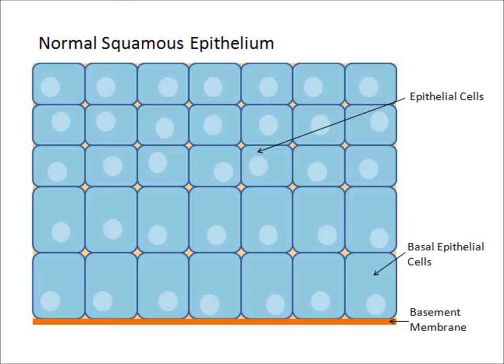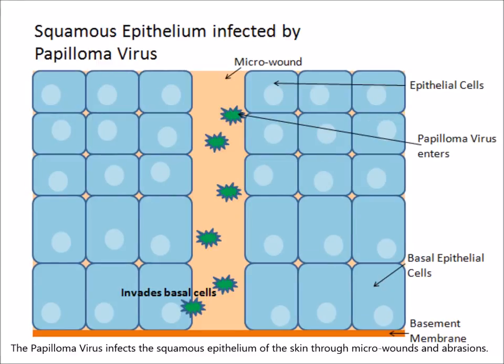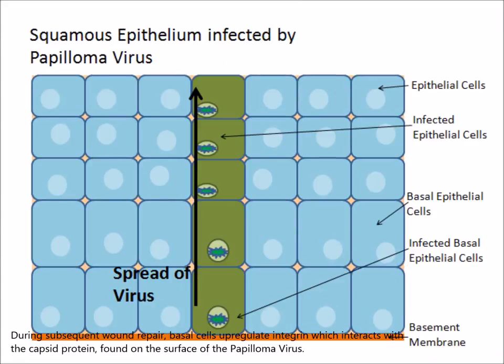This is the normal squamous epithelium that makes up the epidermis. The papilloma virus infects the squamous epithelium of the skin through microwounds and abrasions. During subsequent wound repair, basal cells upregulate, which interact with the capsid protein found on the surface of the papilloma virus. This interaction promotes internalization of the virus.